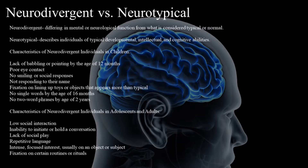Neurodivergent describes differing in mental or neurological function from what is considered typical or normal. Neurotypical describes individuals of typical developmental, intellectual, and cognitive abilities.